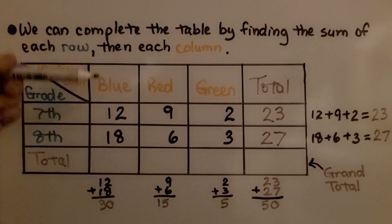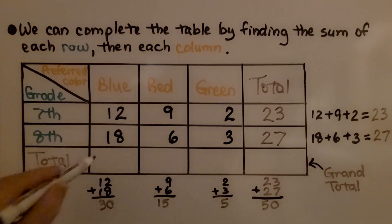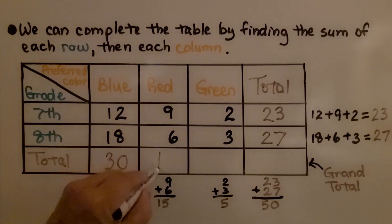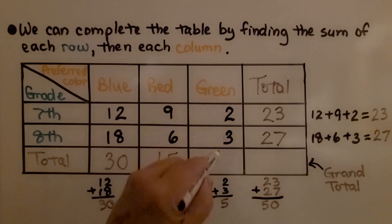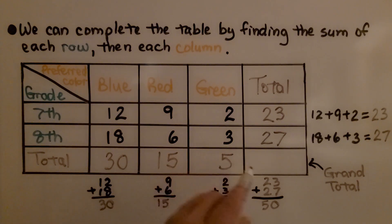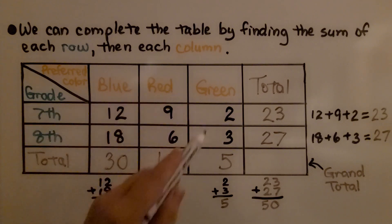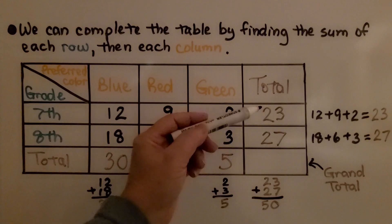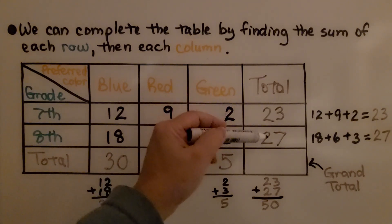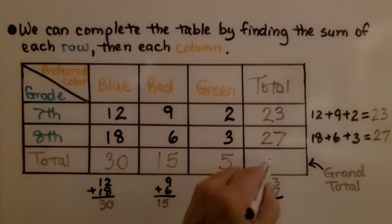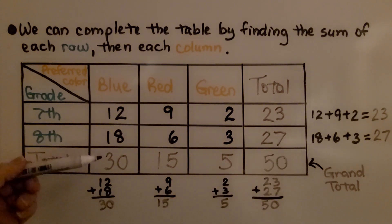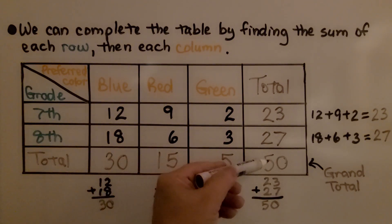Now we can do the columns. We add 12 plus 18, which is 30. We add 9 plus 6, which is 15. And 2 plus 3, which is 5. This gives us the grand total of all the seventh and eighth graders who chose blue, red, or green. We can add 23 plus 27, which is 50, or add the column totals: 30 plus 15 plus 5, which is also 50.